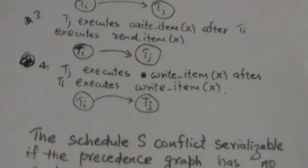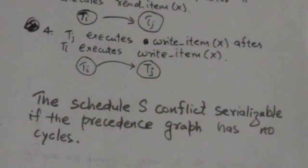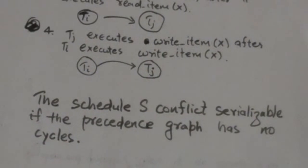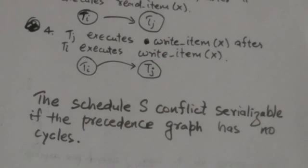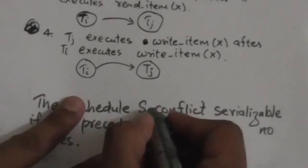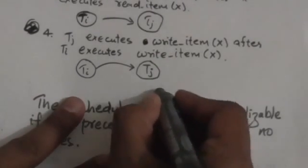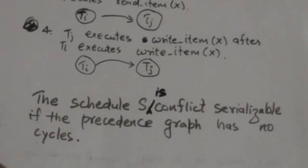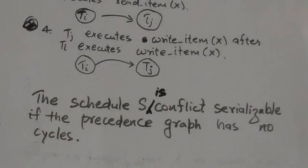If the precedence graph has no cycles, then the schedule S is conflict serializable. This will be more clear after the following examples.